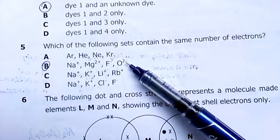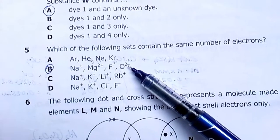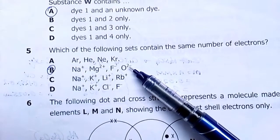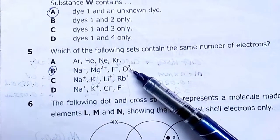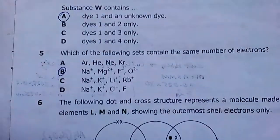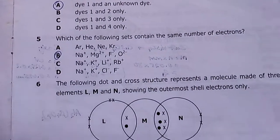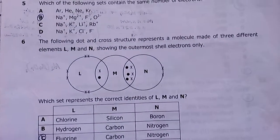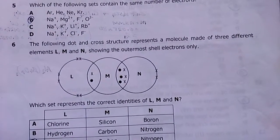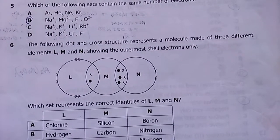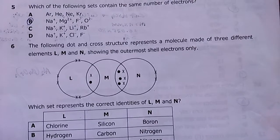Oxygen is 8; since it has a negative charge of minus two it has gained two more electrons, meaning the number of electrons is 10. So my answer is B.